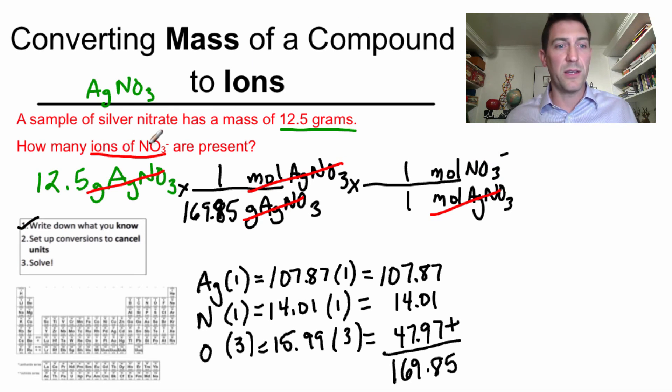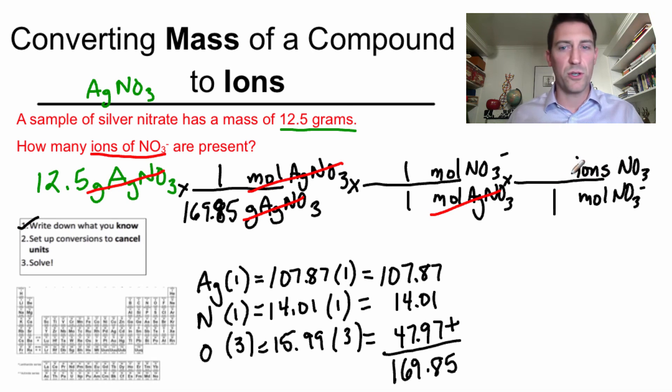But I don't want to be in moles of nitrate ions. I want to be in ions of nitrate. Let's make one more conversion factor right down here. Let's get rid of moles of nitrate and turn that into ions of nitrate. And the way I do that is one mole is equal to Avogadro's number. So this could say atoms, it could say molecules, it could say anything, but it says ions. And when I'm going from moles into ions or moles into atoms or moles into molecules, I use Avogadro's number, which is 6.02 times 10 to the 23rd. Cancel units.